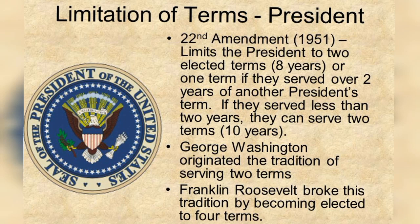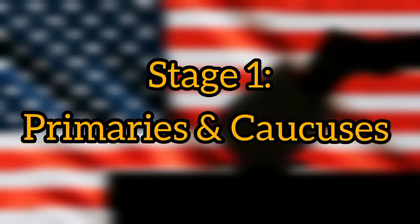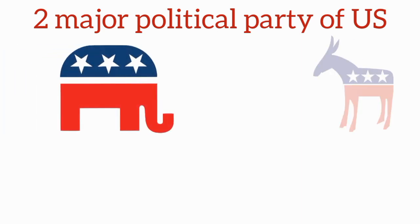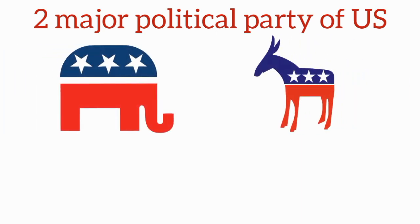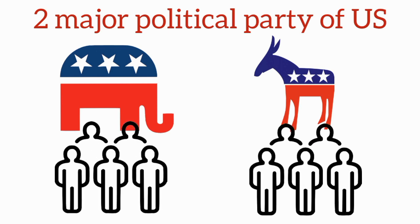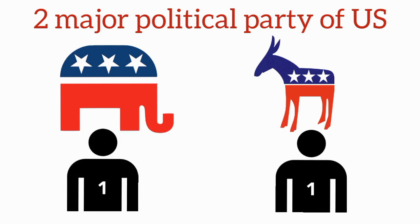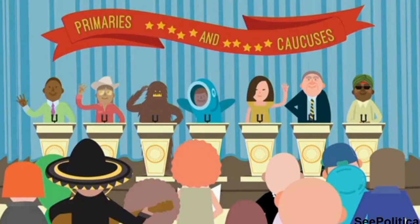Now let's get into the election process. There are two major political parties in the U.S.A.: the Republican Party and the Democratic Party. In both parties, there may be many aspirants who want to contest in the presidential election. Among those aspirants, each party has to choose only one as their presidential candidate. It is for this purpose that primaries and caucuses are held.